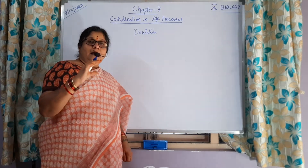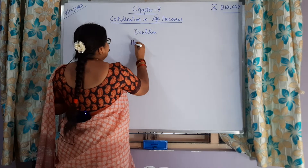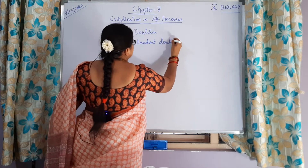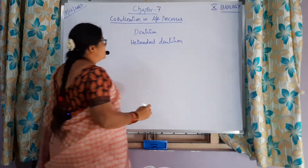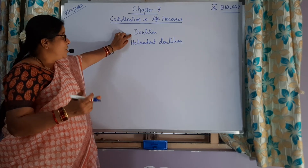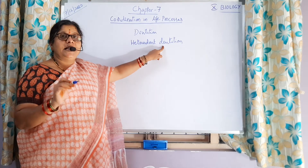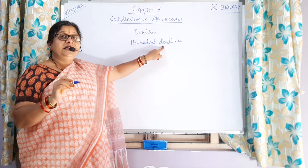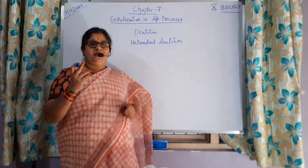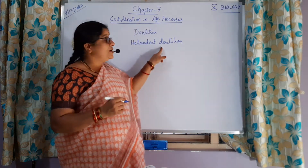So what type of dentition do human beings have? That is said to be heterodont dentition. Dentition means the arrangement of teeth in jaws. It is heterodont dentition because human beings have different types of teeth which help in doing different functions. The arrangement of teeth of different types and shapes is called heterodont dentition.